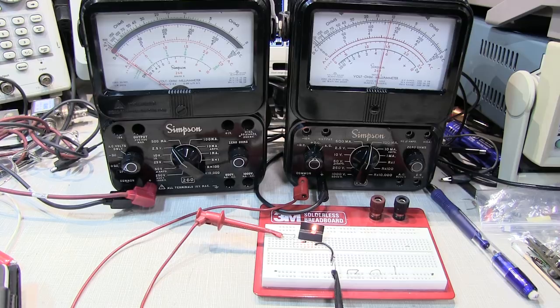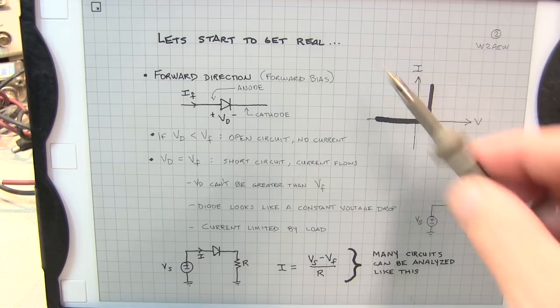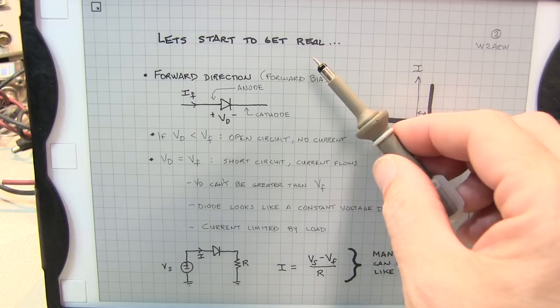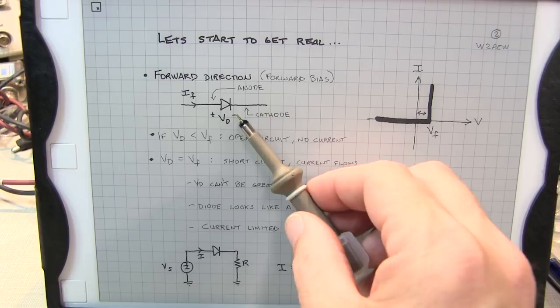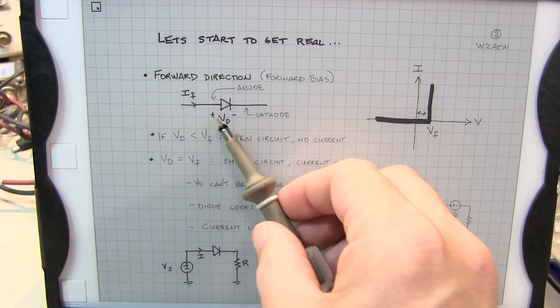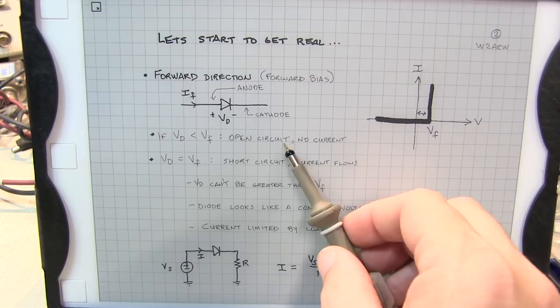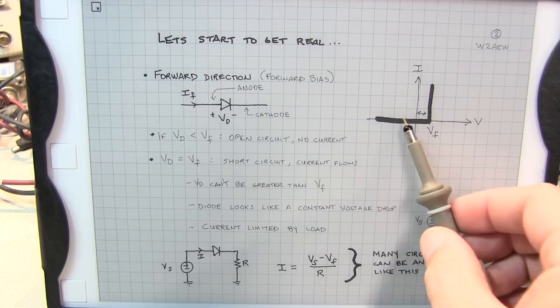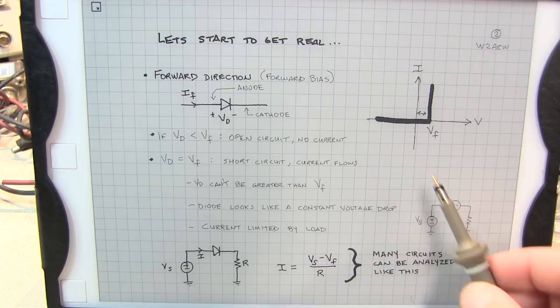Now since ideal diodes don't exist let's start to get a little more real in thinking about diode characteristics and consider the forward voltage drop. When a diode is forward biased there's a voltage drop developed across the anode and cathode of the diode and that voltage is typically denoted in the data sheets as VF or the forward voltage. So if the circuit is not providing a diode voltage that gets up to VF the diode will still look like an open circuit and no current will flow. Once the voltage reaches VF then the diode conducts and allows current to flow.